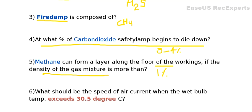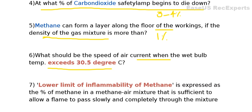The next question: what should be the speed of air current when the wet bulb temperature exceeds 30.5 degrees Celsius? Normally, the wet bulb temperature should not exceed 33.5 degrees Celsius. If it exceeds 30.5 degrees Celsius at any place, then the air current should be 1 meter per second. Remember these three values: 30.5°C, 33.5°C, and 1 meter per second.